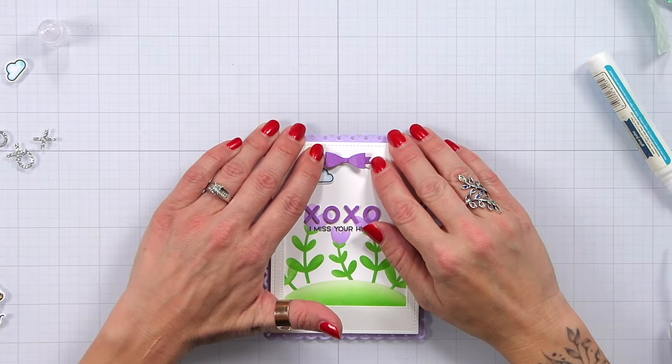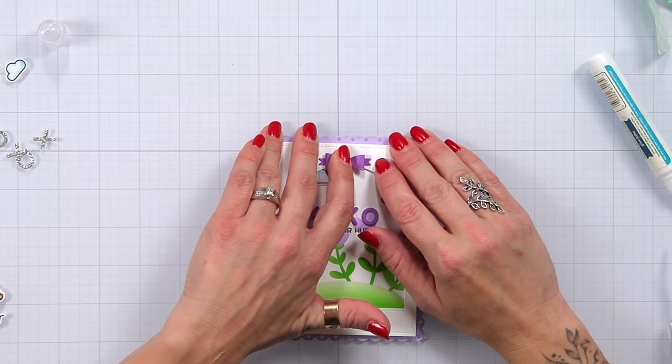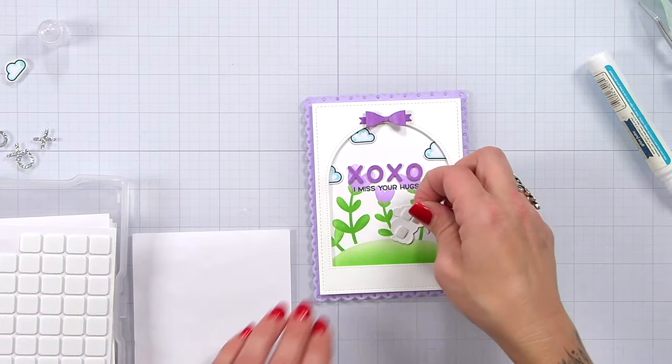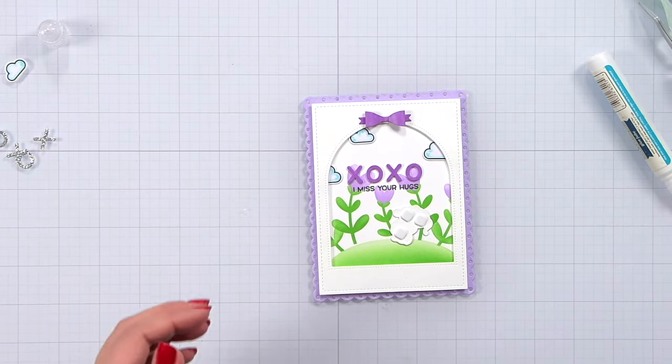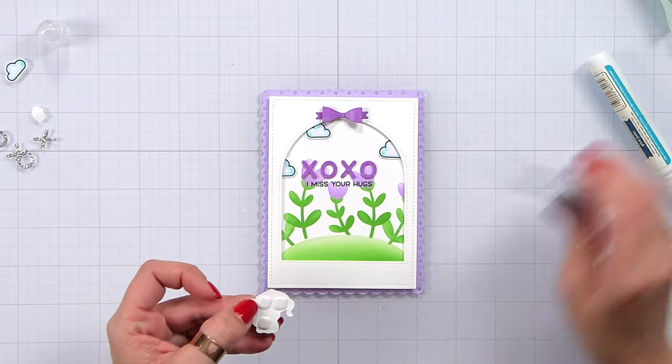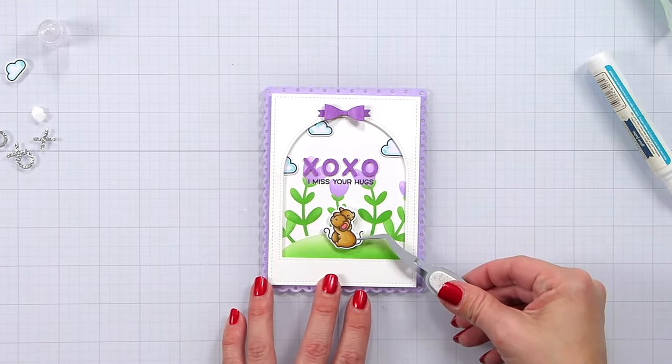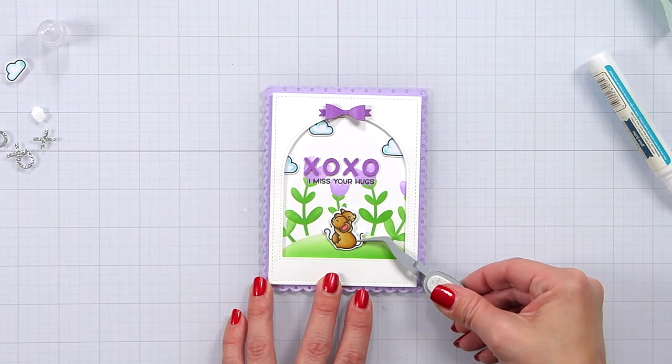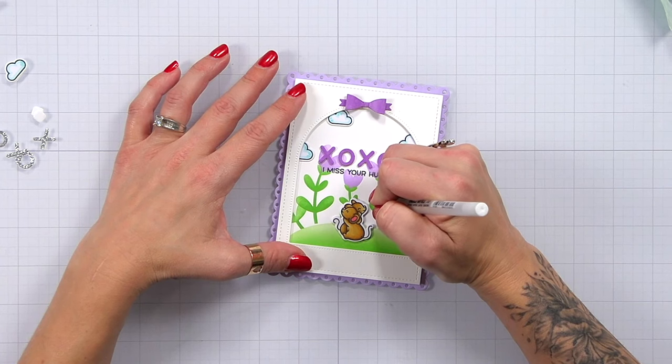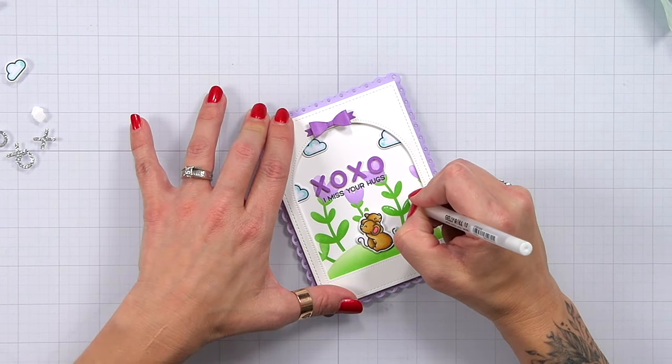Then I can bring in my cute little mice so I did add some thin foam squares behind them. I'll remove the backing of the foam squares and I'm going to add that about center-ish. I struggled with placement actually a little bit on the mice but I think it's just a really simple and cute layout for them and they're hugging so I miss your hugs. I just love how it all ties together really well.